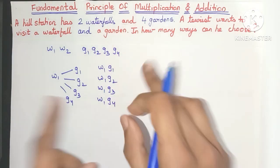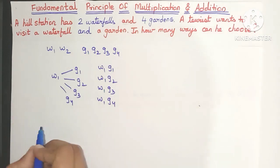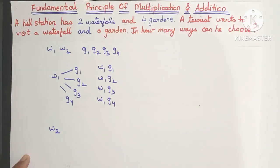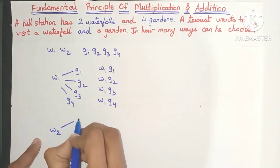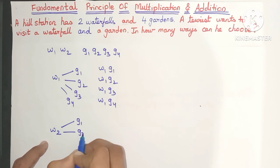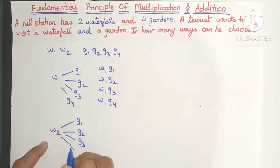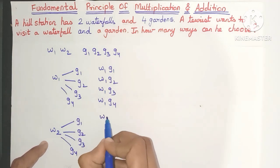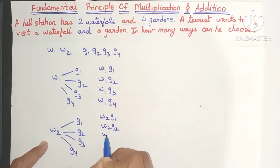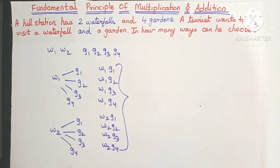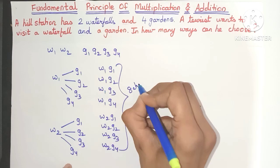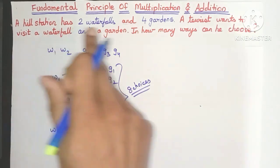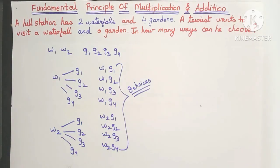So here I have four choices. However, he can also opt to go to waterfall W2. In that case also, after he visits W2 he has to visit a garden, so he will visit either G1, G2, G3, or G4 — again four combinations. So totally, in how many ways can he choose? He can choose in eight ways — he can visit a waterfall and a garden both in eight ways.